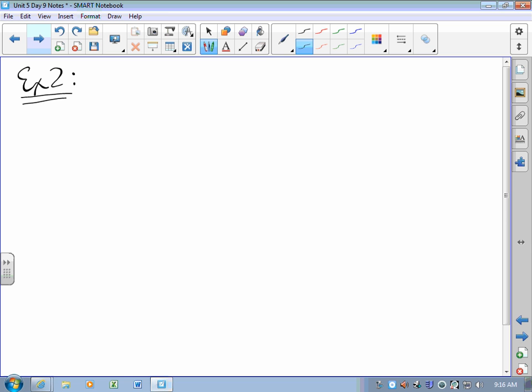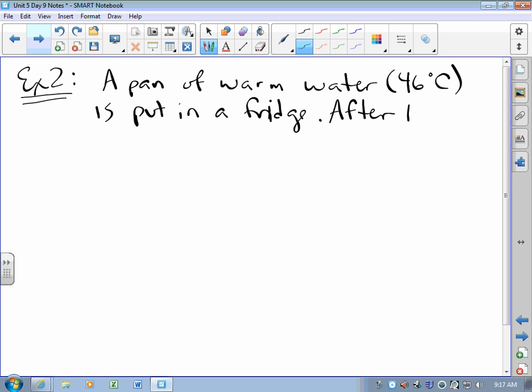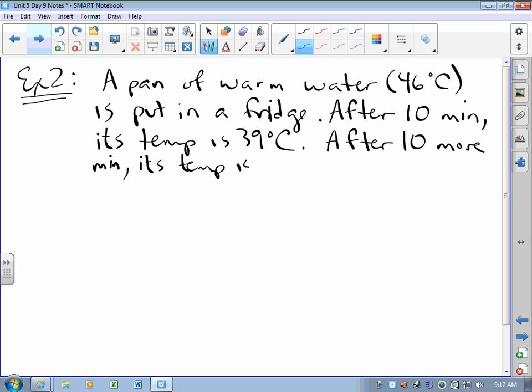If I may, a pan of warm water, and by warm water I mean 46 degrees Celsius, is put in a refrigerator. After 10 minutes, its temperature is 39 degrees Celsius. After 10 more minutes, its temperature is 33 degrees Celsius. Estimate the temperature of the fridge.